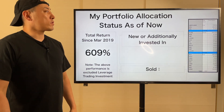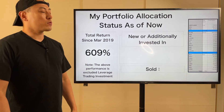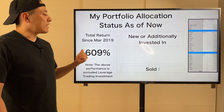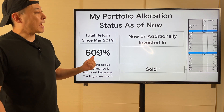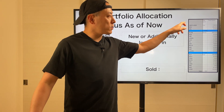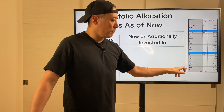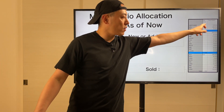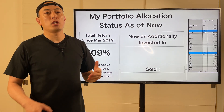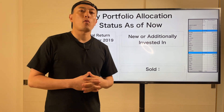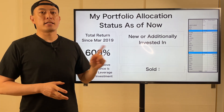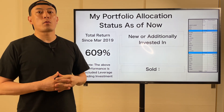So this is my proper allocation status as of now. Total return since March 2019 is 690%. Last week, no updates. These are my all crypto assets currently invested in, and these are my total investment return for each crypto asset. Here I need to state much more detailed information about my portfolio allocation — announcements are real-time.